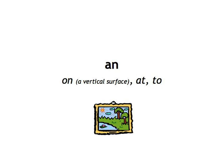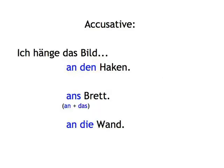An, meaning on a vertical surface, at or to. In the accusative, showing movement — remember the video camera. Ich hänge das Bild an den Haken — I hang the picture on the hook. Ich hänge das Bild ans Brett — I hang the picture on the board. An's is the contracted form of an das. Ich hänge das Bild an die Wand.